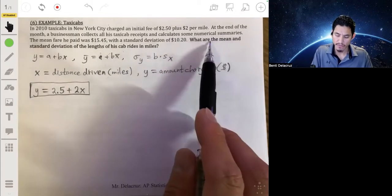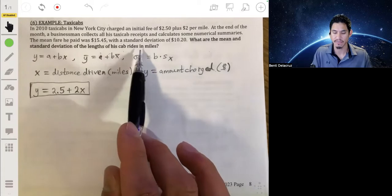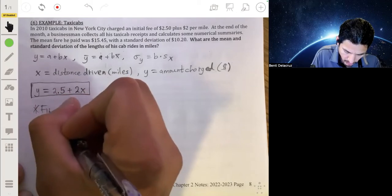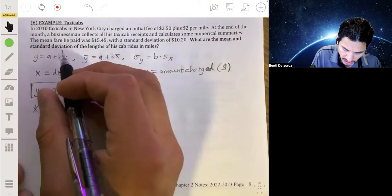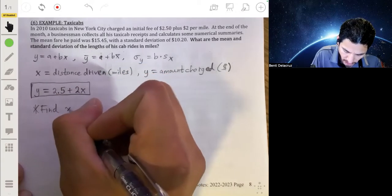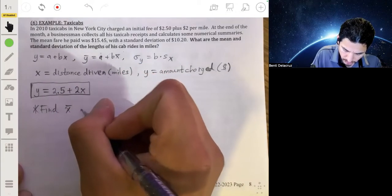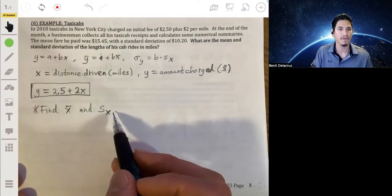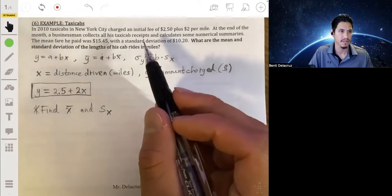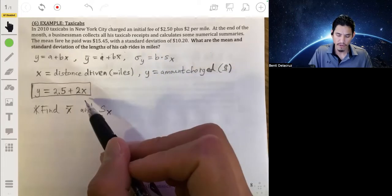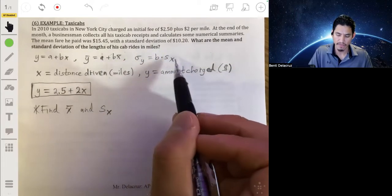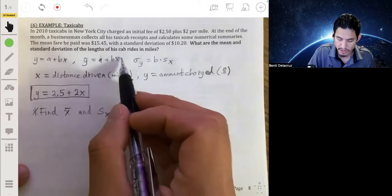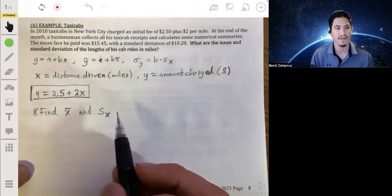And what do we want to find? We want to find the mean and standard deviation of the length of his cab rides in miles. So find x bar and the standard deviation of x. That's the goal. We're going to find x to be the distance driven in miles. So we already have an equation for x bar and for the standard deviation of x, just not isolated. So we're going to use these equations to figure out what x bar and standard deviation for x is.